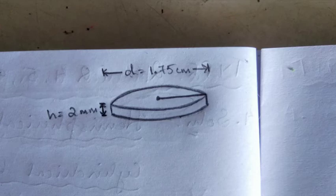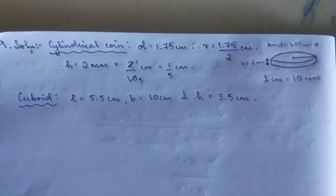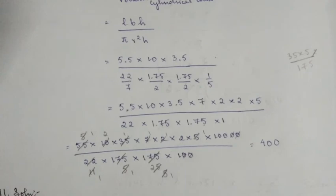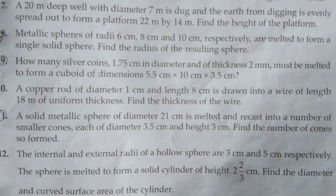You have to find out the number of spherical balls. So number of balls is equal to volume of cone divided by volume of spherical balls. If you want to copy this, leave some space for question number 9 which we'll do next.